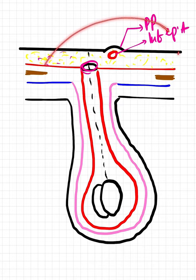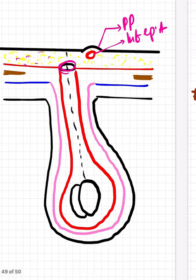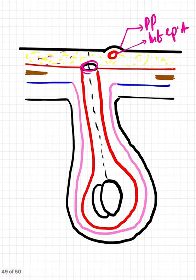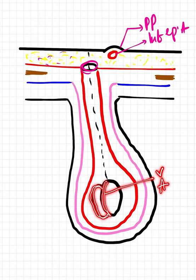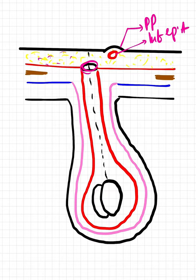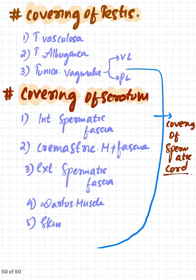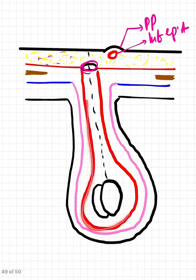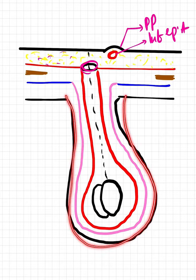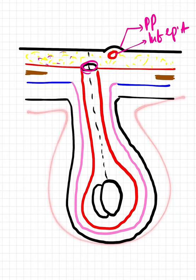The coverings of the testis, from inside to outside, are: tunica vasculosa, tunica albuginea, and tunica vaginalis. The tunica vaginalis has an inner visceral layer and an outer parietal layer.